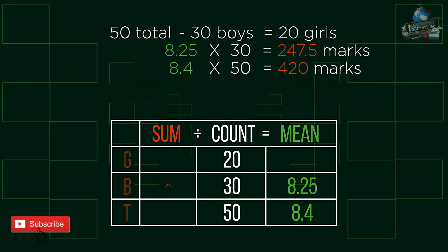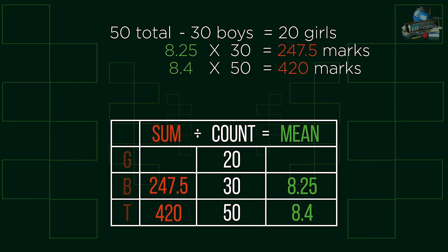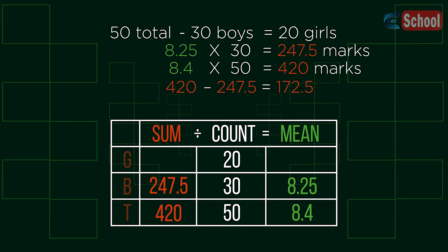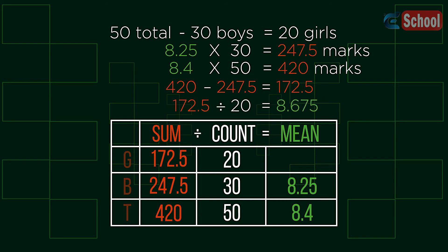We can put this information into our table. Because the total sum marks come from the sum of the boys' and girls' marks, we can subtract the boys to find the girls' total marks and the first part of our answer: 172.5. Finding the mean is then a simple matter of sum divided by count, for a mean of 8.625.